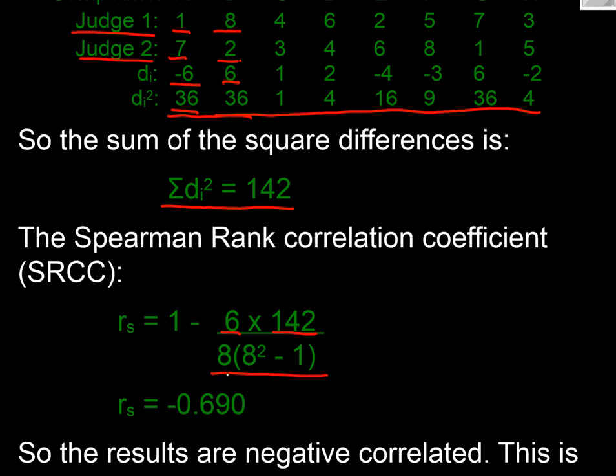That's 1 minus 6 times the sum of the differences divided by n—that's the number 8, we had eight competitors—n over n squared times n squared minus 1 in the brackets there. If we calculate that all out, we get in this case an SRCC, a rank correlation coefficient, of minus 0.69.